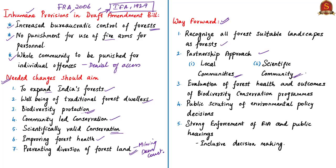As a way forward, the author suggests recognizing all forest-suitable landscapes as forests, adopting a partnership approach with local communities and the scientific community, conducting independent scientific evaluation of forest health, establishing public scrutiny of environmental policy decisions, and strong enforcement of environmental impact assessment practices including public hearings with affected communities. A progressive law shall be passed that must be adopted in all states and union territories, leading to community-led, scientifically valid conservation of Indian forests.